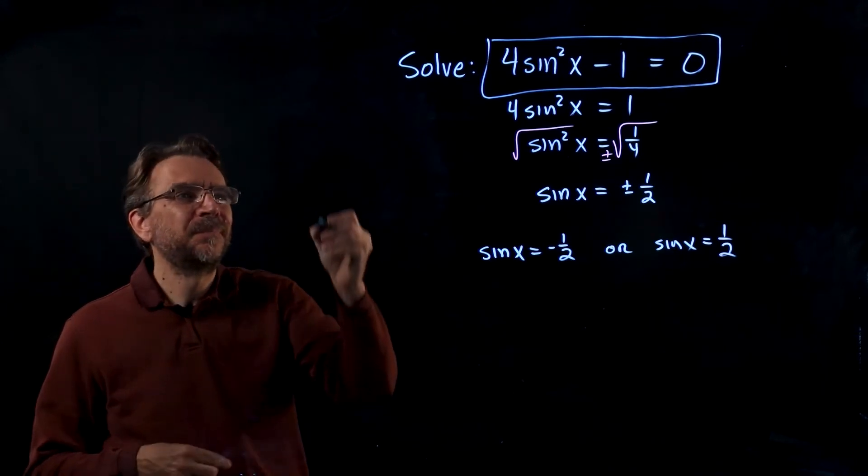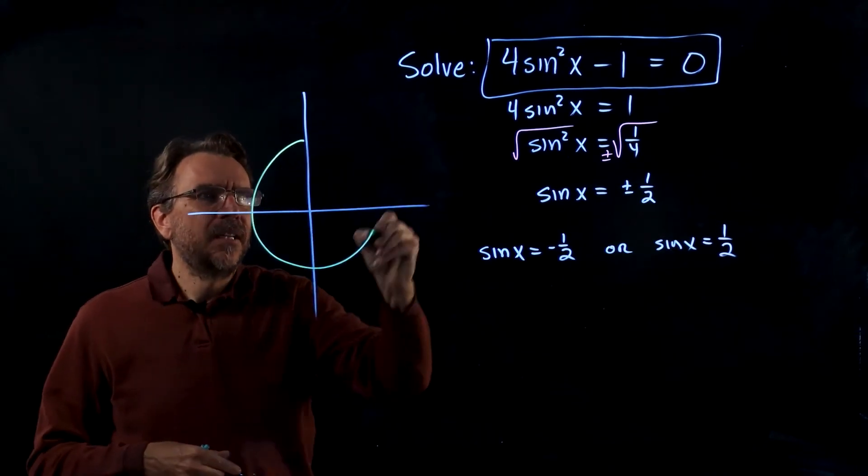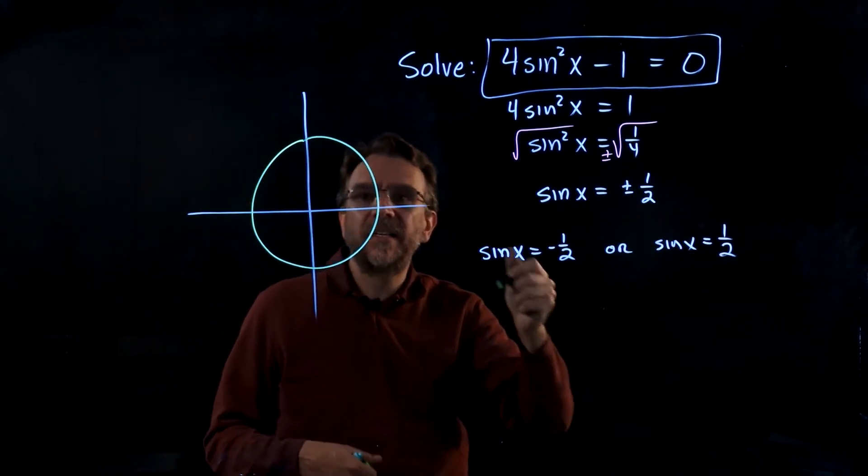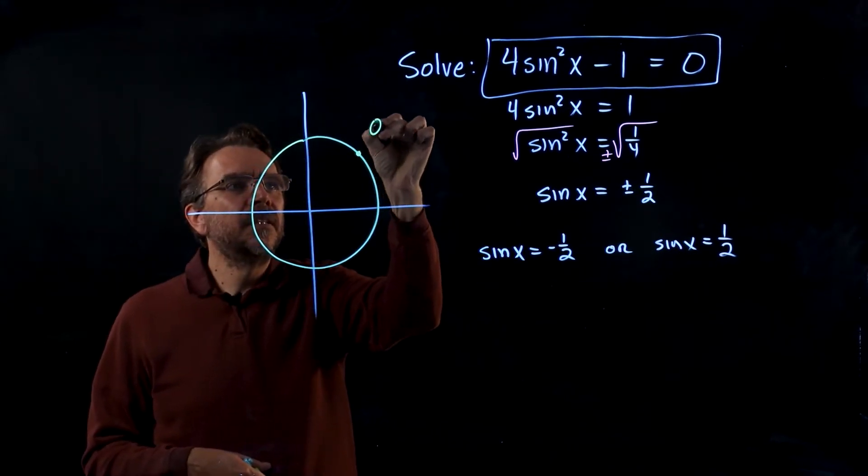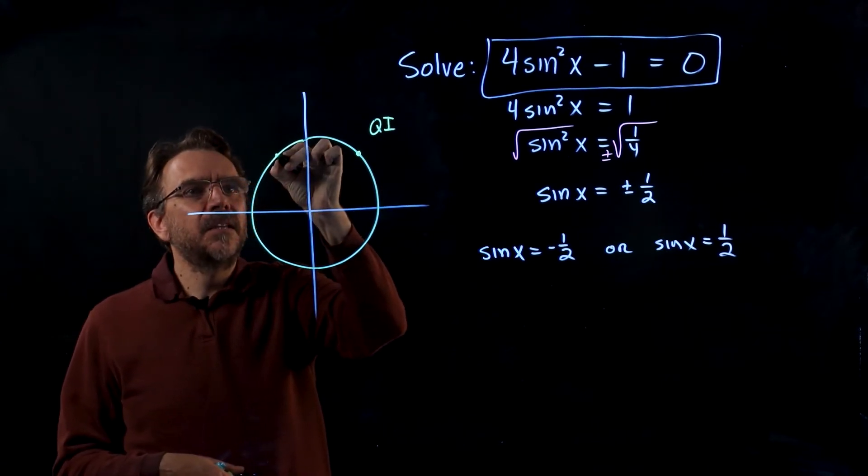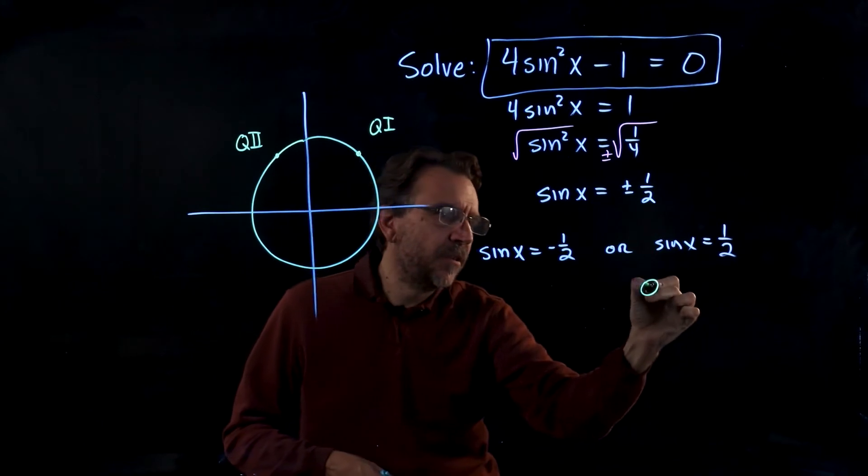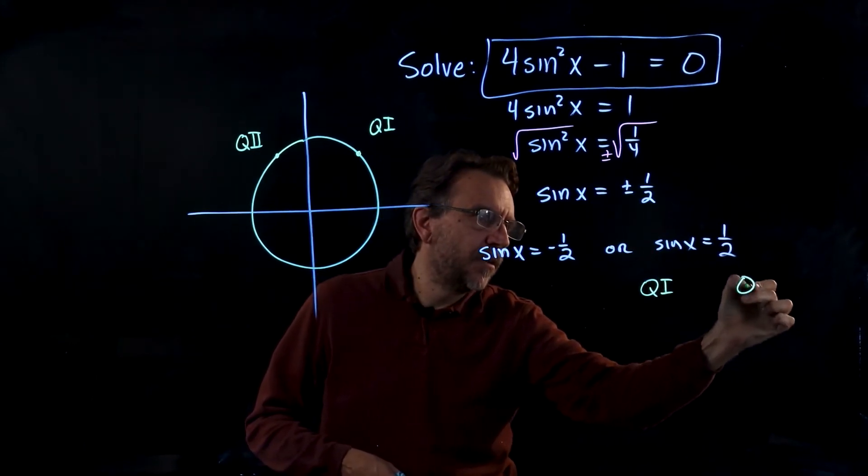So let's go ahead and look at the unit circle. Now let's look at this one first. So sine x is positive in q1 and q2. So this is going to have q1 answers and q2 answers.